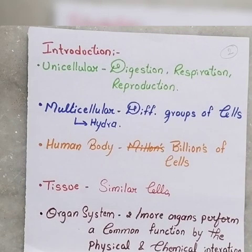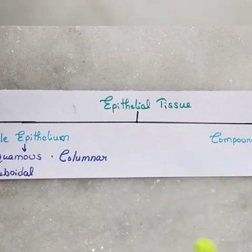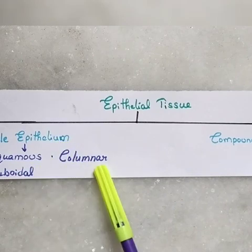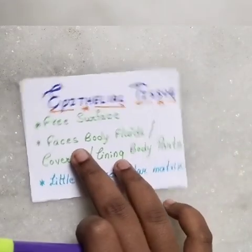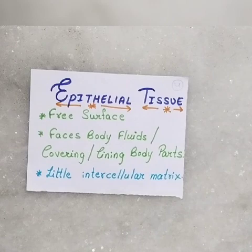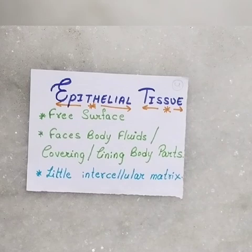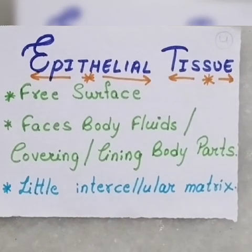So this is all about the introduction. Now we will talk about epithelial tissue. There are two types of epithelial tissue: simple epithelium and compound epithelium. Simple epithelium is divided into three types: squamous epithelium, cuboidal epithelium, and columnar epithelium. Epithelial tissue covers free surfaces like skin, tubes, or layers.